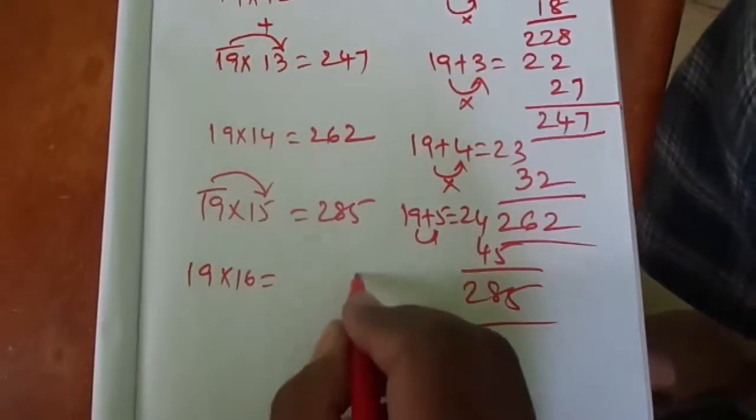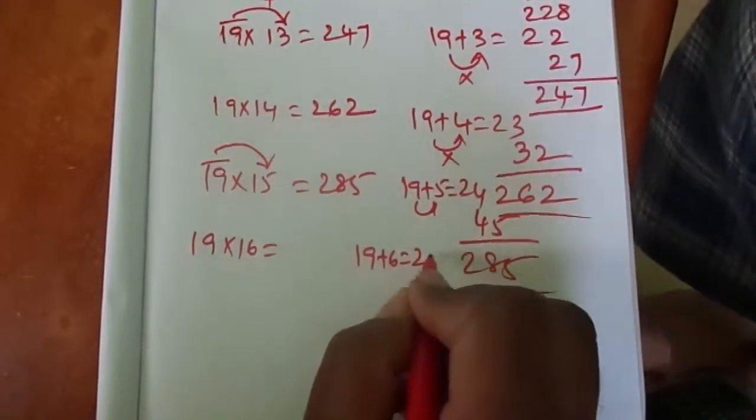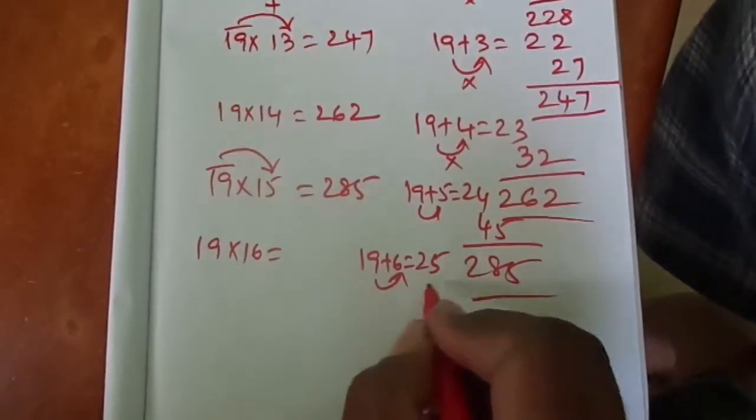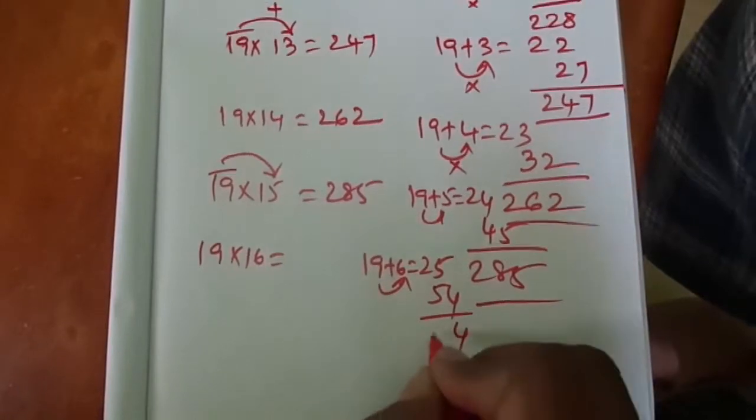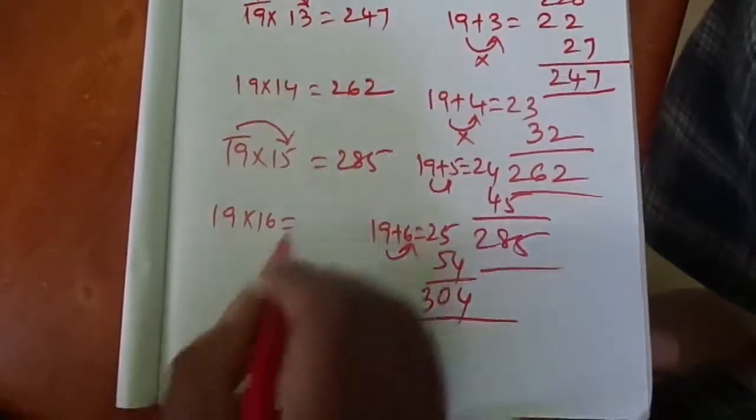19 × 16: 19 plus 6 equals 25. 9 into 6 is 54. The answer is 304.